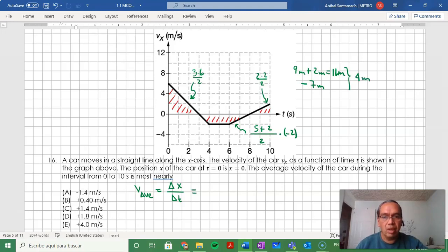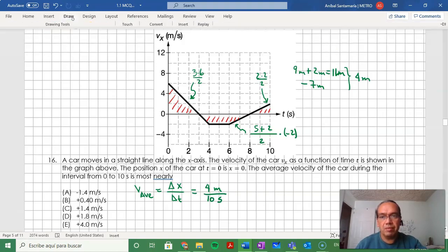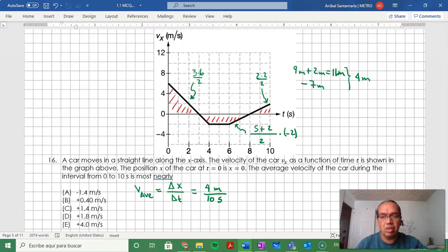Therefore, you have a total of 4 meters over a time interval of 10 seconds. So your average velocity is positive 0.40 meters per second.